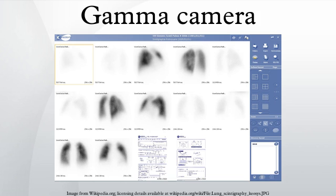A gamma camera consists of one or more flat crystal planes optically coupled to an array of photomultiplier tubes in an assembly known as a head, mounted on a gantry. The gantry is connected to a computer system that both controls the operation of the camera as well as acquisition and storage of acquired images.